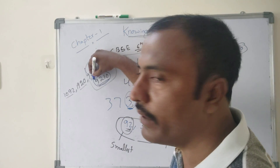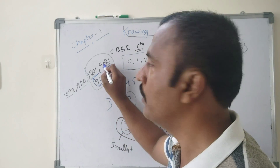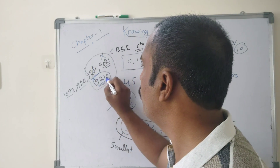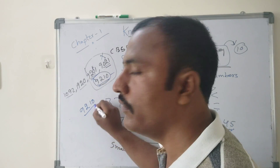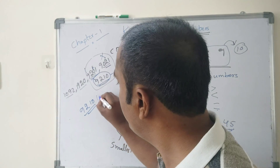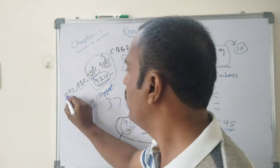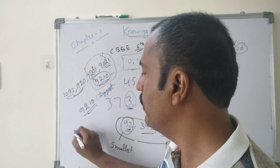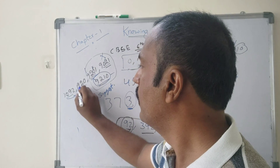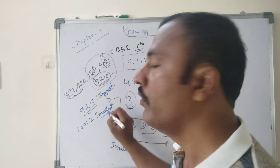At the 1000th place both 1092 and 1920 are equal — next we go to the 100th place. At the 100th place: 1920 has 9, 1092 has 0 — we can eliminate 1092. Then compare the 10th place: 1920 has 2, 921 has 1 — so 9210 is the biggest number. For the smallest, comparing 100th place: 1092 has 0, so 1092 is the smallest number.